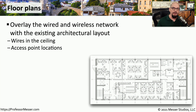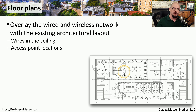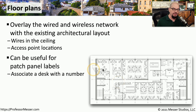If you walk into a wiring closet or a data center, you may notice that there are a series of floor plans that have probably been posted to the wall. This allows the network team to document where the wires may be going overhead or under the floor, and it may show where access points may be located and the coverage for wireless networks in a particular area. You might also see floor plans with different numbers next to every desk, which would document what the labels are on the patch panel for each individual user.